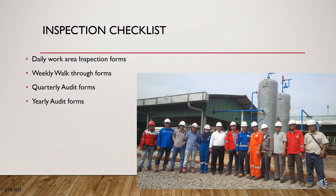Inspection checklists are an important parameter of the evaluation plan. These can include daily inspection checklists, weekly walkthroughs or management walkthrough audit forms, quarterly audit forms, and yearly audit forms. This variety of inspection checklists helps us evaluate the existing condition of HSE implementation at project sites and identify the present implementation condition at the workplace.